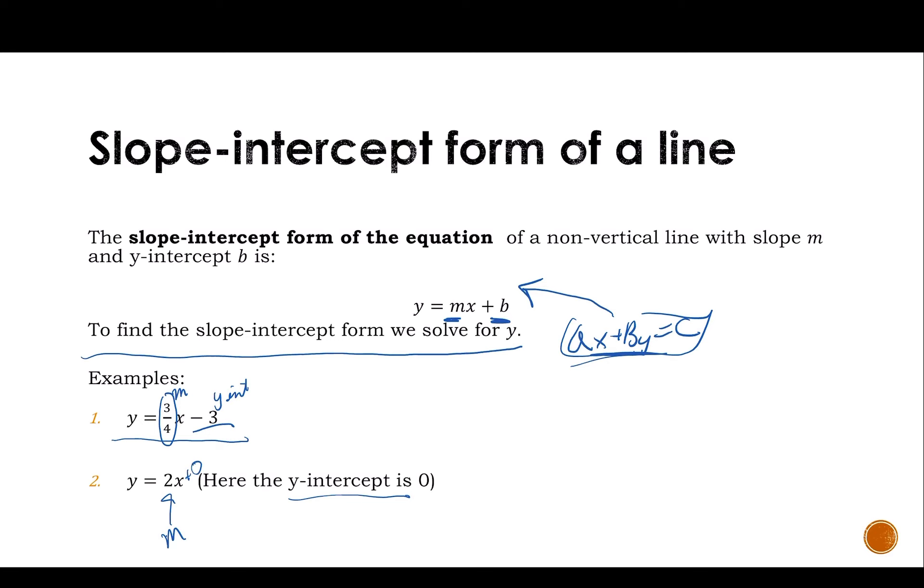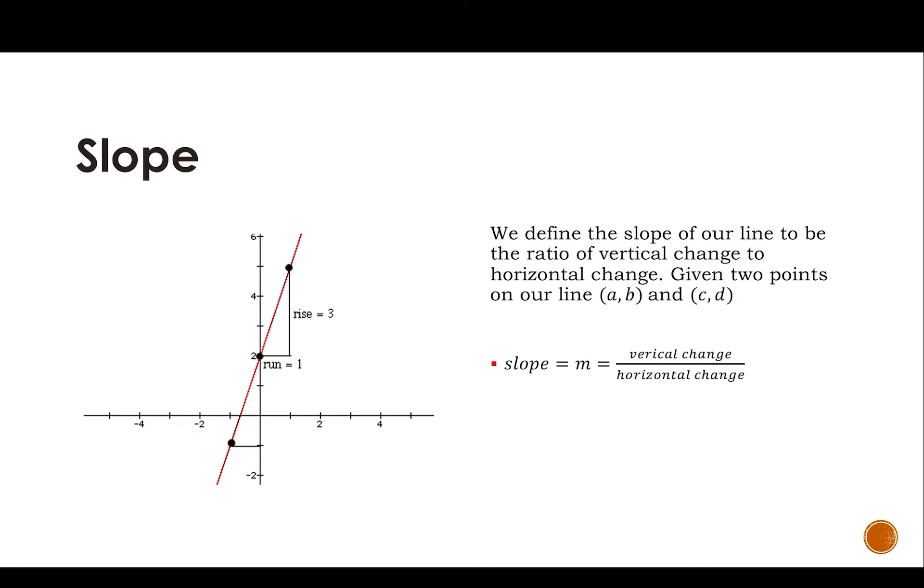What is slope, though? Slope is our change in y over our change in x. It's our vertical change over our horizontal change.